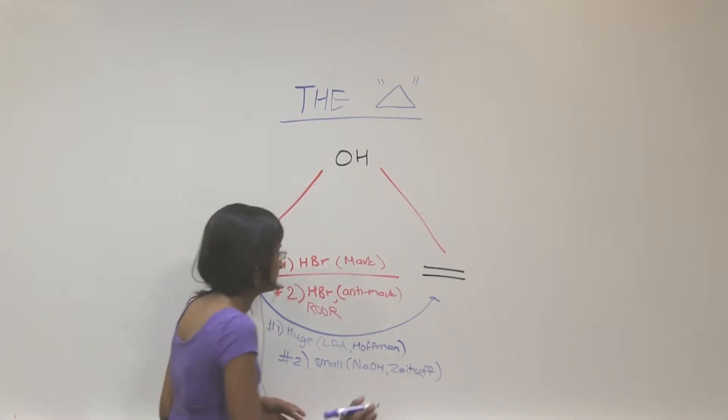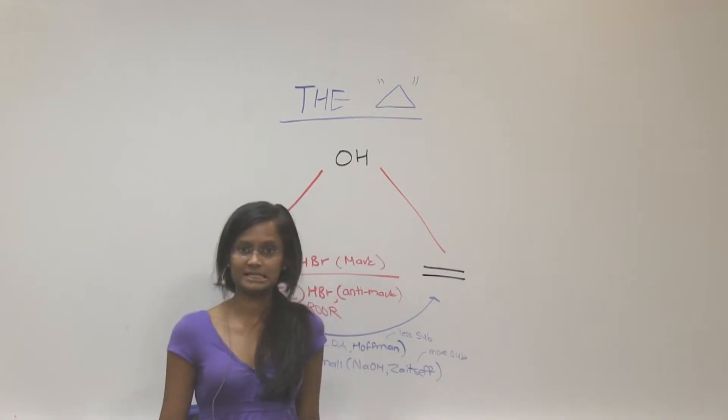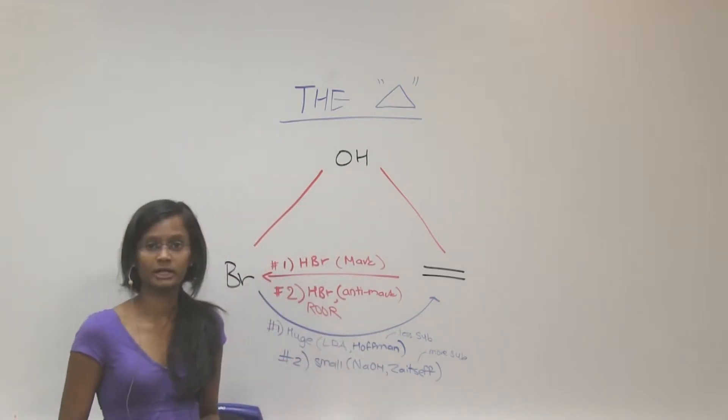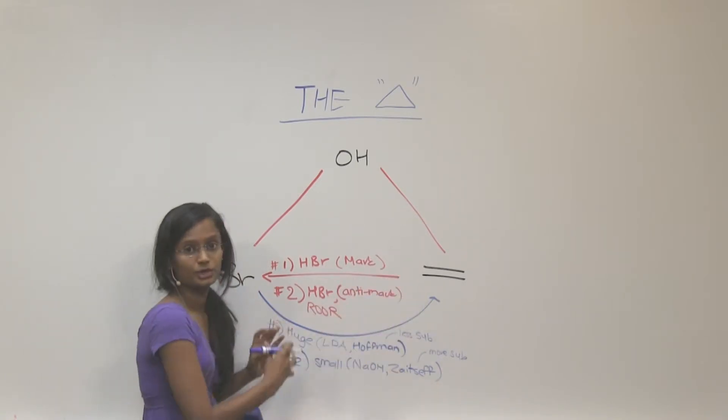Hoffman is where you have less substitution, and Zaitsev is when you have more substituted alkene. So these are the two ways you learn in chapter 9. Okay, so we're done with the bottom triangle.